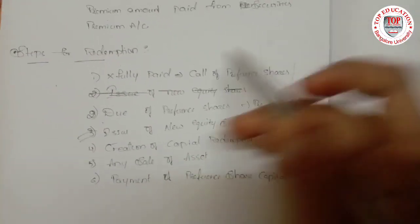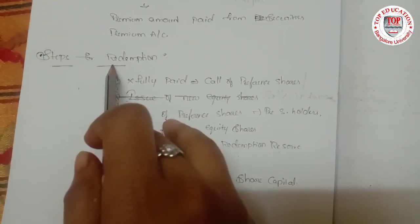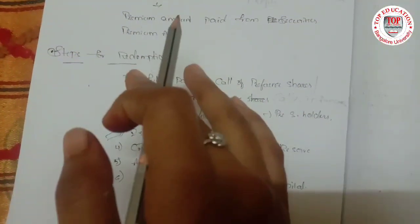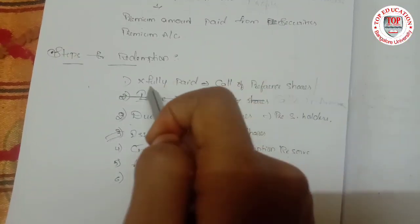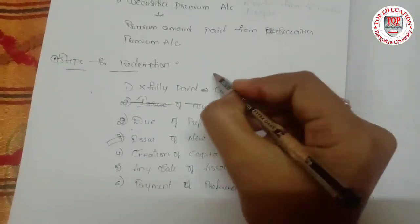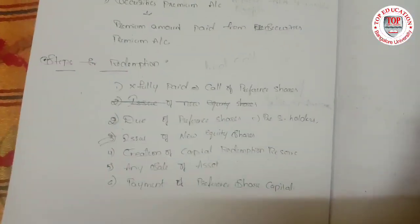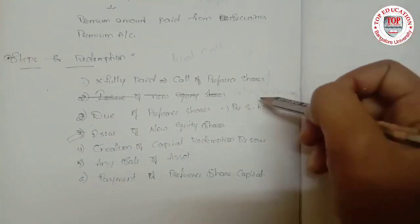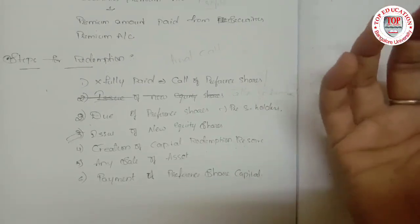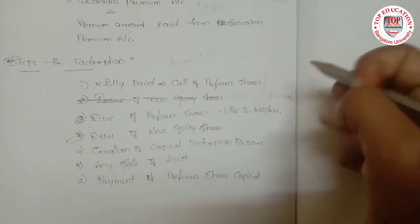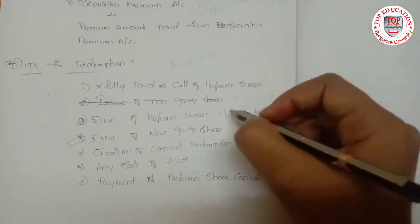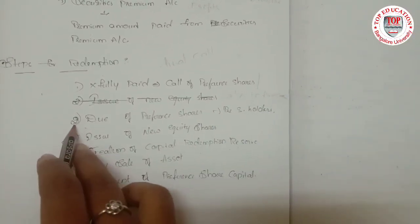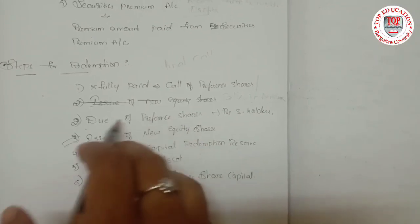There are six steps involved in the redemption of preference shares. The first step is: if the preference shares to be redeemed are not fully paid, we should make a final call to the preference shareholders. If the final call has already been made and there are call arrears, the amount received is recorded as a journal entry.